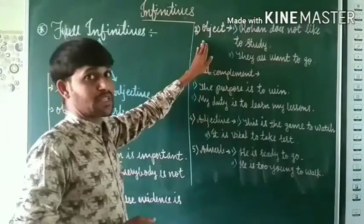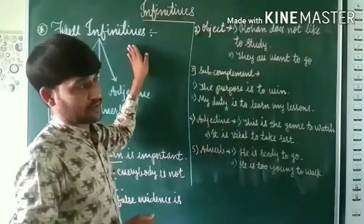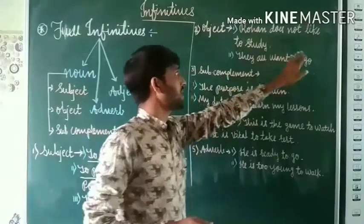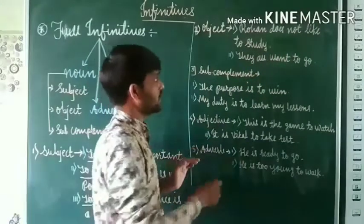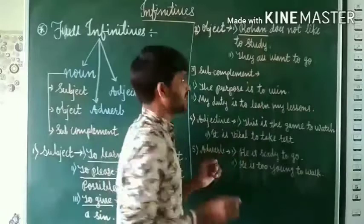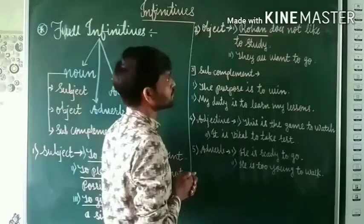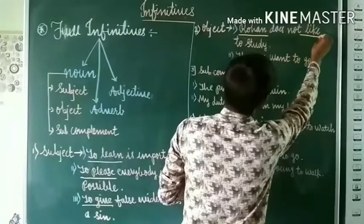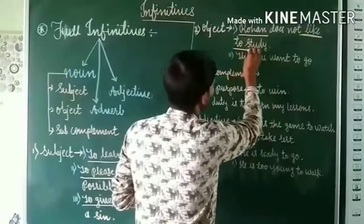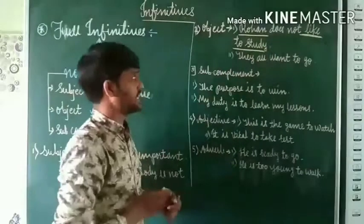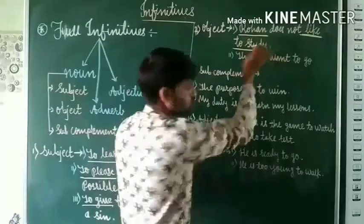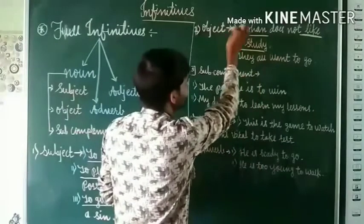Next, a noun can be used as an object with a full infinitive. Full infinitive can be used as an object in the sentence. For example: 'Rohan does not like to study.' Here 'Rohan' is the subject, 'like' is the verb, and 'to study' is the object of that verb. So 'to study' is a full infinitive functioning as a noun used as an object in the sentence.